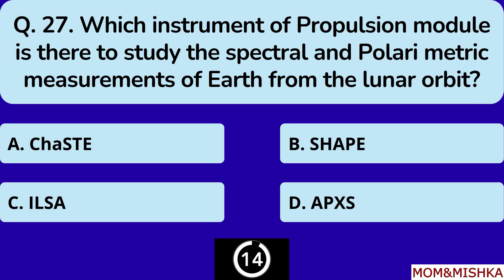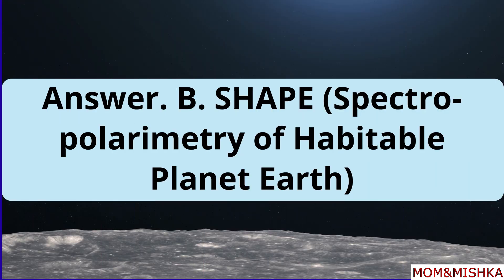Which instrument of the propulsion module is there to study the spectral and polarimetric measurements of Earth from the lunar orbit? It's SHAPE, option B.